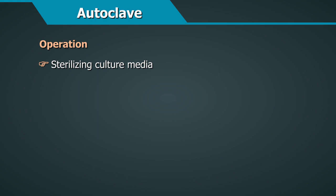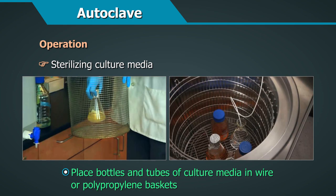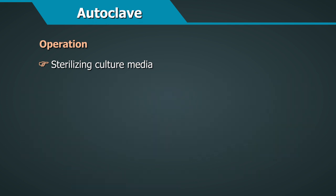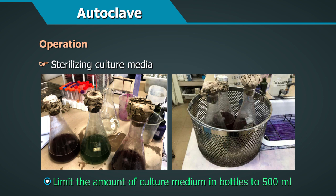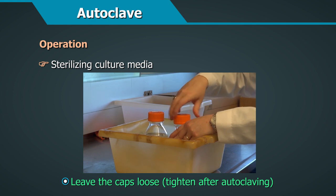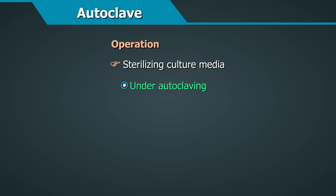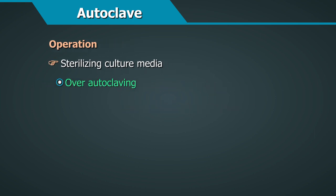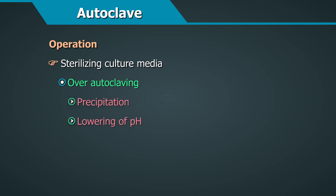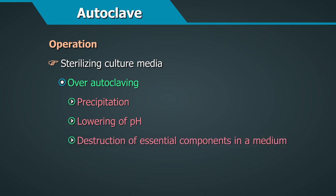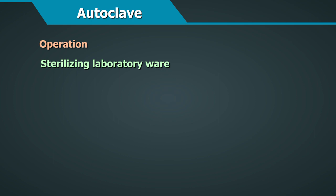When sterilizing culture media, place bottles and tubes in wire or polypropylene baskets. Limit the amount of culture medium in bottles to 500 ml and leave the caps loose, tightening them after autoclaving. Always sterilize the media at the correct temperature and for the correct length of time as instructed. Under-autoclaving can result in an unsterile medium, whereas over-autoclaving can cause precipitation, lowering of pH, or destruction of essential components.